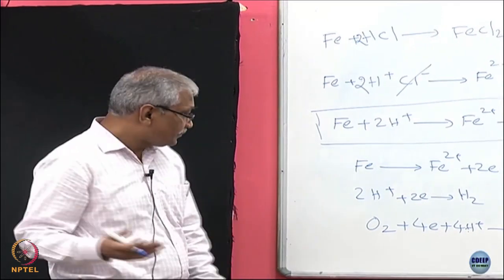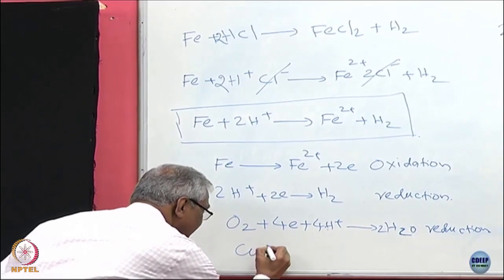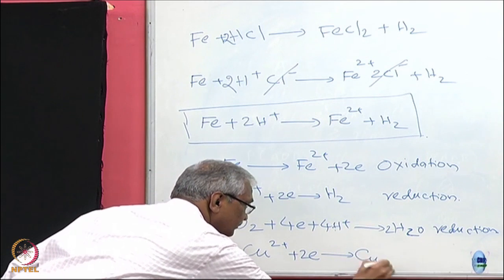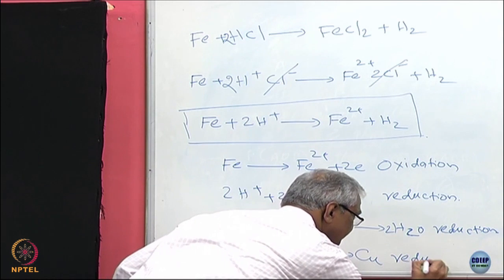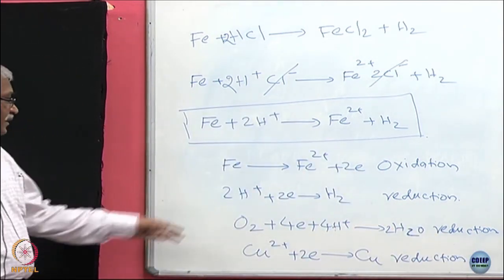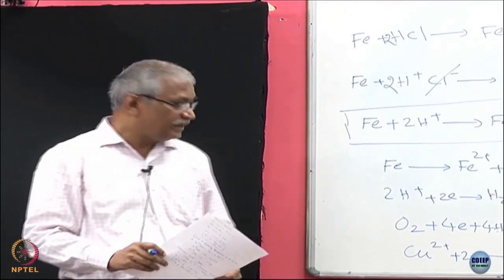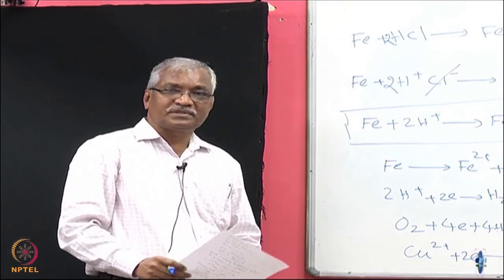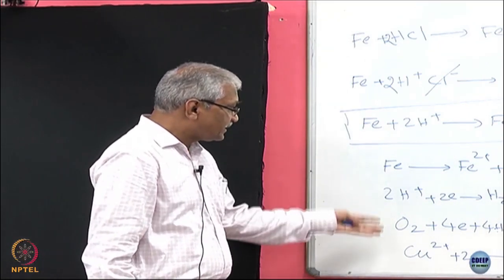The same electrons provided by iron can go to H⁺ or can go to oxygen and form water. You can add even more — for example, if there is a copper ion Cu²⁺ in solution, it can combine with 2 electrons to form copper. So there can be multiple reduction reactions, making the system more and more complex. In practice, corrosion processes are always complex — many reactions can really occur.